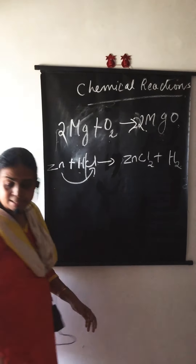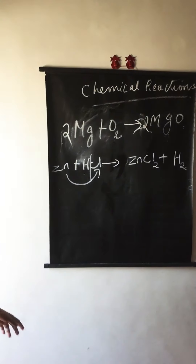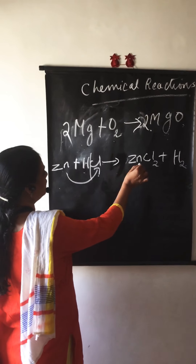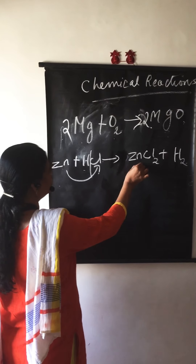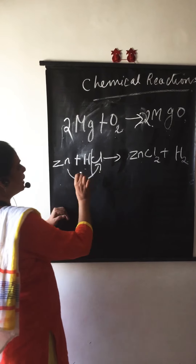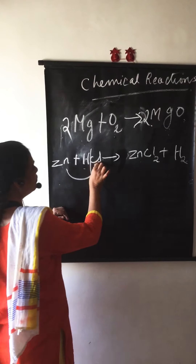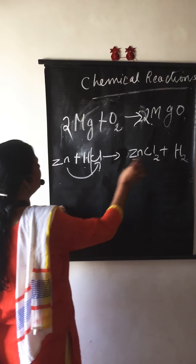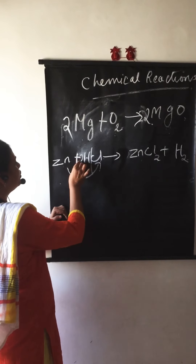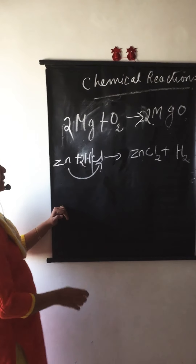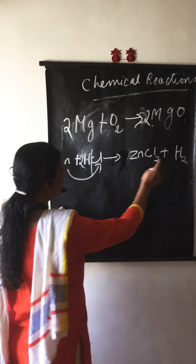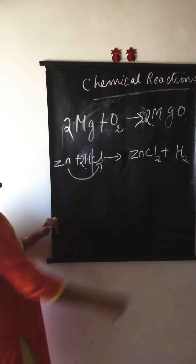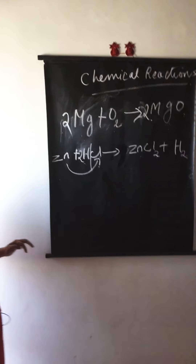Let us see how to balance this reaction. Here one zinc atom on the left and one zinc atom on the right. But there is one chlorine on the left and two chlorine on the right. So just put 2 in front of HCl. Now hydrogen is balanced and chlorine is also balanced. The equation is balanced.